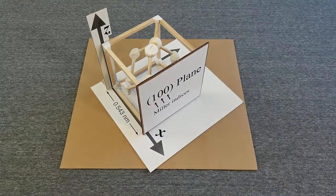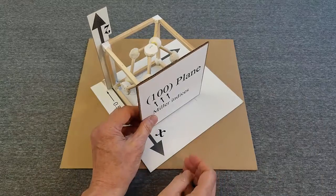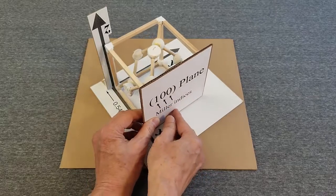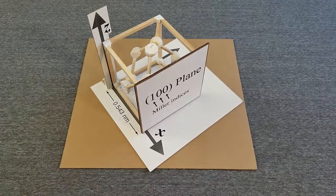The three numbers are the Miller indices. The plane intersects the x-axis at x equal 1 and does not intersect the y-axis or z-axis.